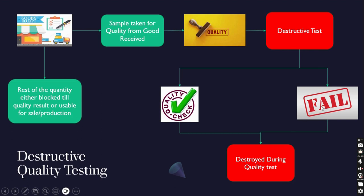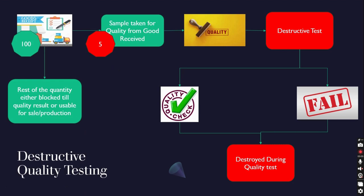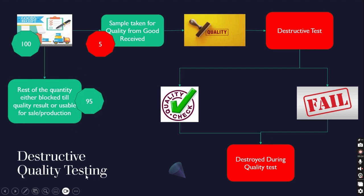In one word, destructive testing: a portion of the goods received is taken out, quality checked, and whether it passes or fails, it will not be added back to inventory — it will be destroyed either way. For example, if in a goods receipt the organization received 100 quantities, they set a standard that 5% of that shipment will be taken out, sent to quality, destructively tested and destroyed, and the remaining 95 will be added to inventory for production or sale.